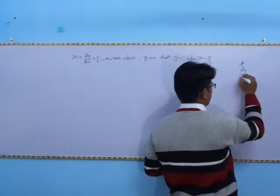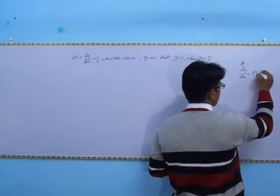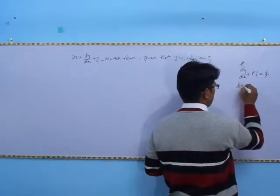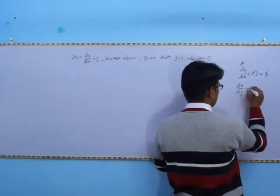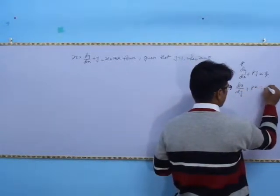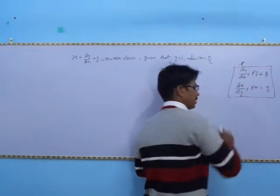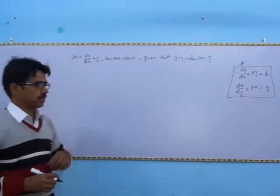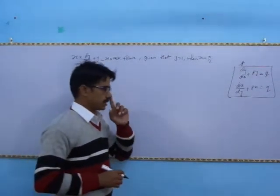The standard linear form is: dy/dx plus P·y equals Q. Otherwise, dx/dy plus P·x equals Q. This is the formation of a linear differential equation.